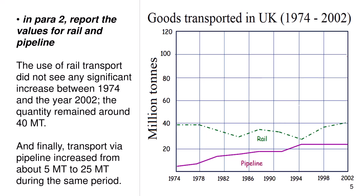In paragraph 2, report the values for rail and pipeline. The use of rail transport did not see any significant increase between 1974 and the year 2002; the quantity remained around 40 MT. And finally, transport via pipeline increased from about 5 MT to 25 MT during the same period.